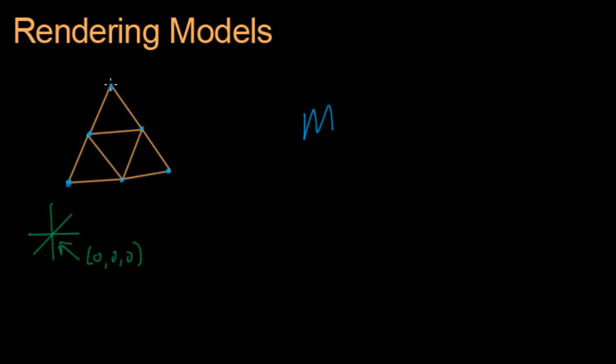We can make a model matrix that, for example, translates a vector ten feet to the right and the video card will take every single vertex in our triangle mesh and run it through this matrix and transfer it ten feet to the right. That's exactly what we want.